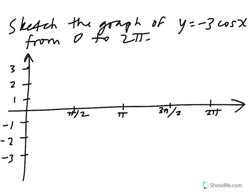So now let's look at a problem that's similar to something that's on your homework. The problem is: sketch the graph of y equals negative 3 times cosine of x on the interval from 0 to 2 pi.